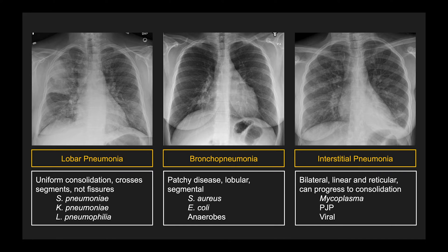There are prototypical etiologies or bugs that can cause each of these patterns, but there's so much overlap among the three that it's not really useful to memorize what bug causes what kind of pneumonia — except for interstitial pneumonia. If you see an interstitial pneumonia pattern, I usually bring up the possibility of mycoplasma or viral pneumonia, or if the patient is immunocompromised, possibly PJP pneumonia.